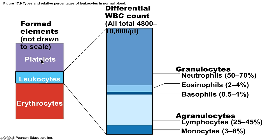White blood cells have a normal range of 4,800 to 10,800 cells per microliter of blood and are divided into granulocytes and agranulocytes based on the presence or absence of visible granules in their cytoplasm. Of the granulocytes, neutrophils are the most numerous at 50–70%, eosinophils account for 2–4%, and basophils account for about 0.5–1%. Of the agranulocytes, lymphocytes account for 25–45% and monocytes account for 3–8% of all white blood cells.